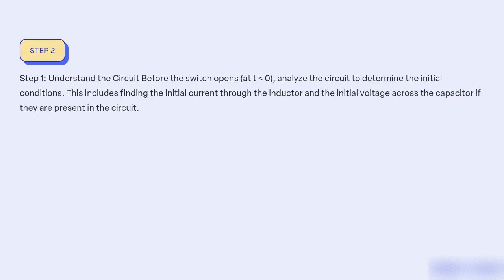Step 1: Understand the circuit before the switch opens at T=0. Analyze the circuit to determine the initial conditions. This includes finding the initial current through the inductor and the initial voltage across the capacitor if they are present in the circuit.